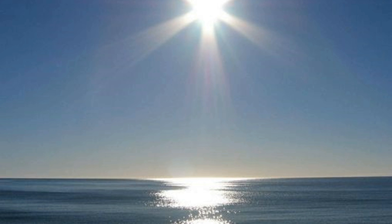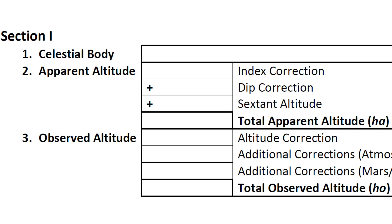In our example, let's assume the sun is roughly 20 degrees above the horizon. Except in extreme weather conditions, there will be no atmospheric adjustments to worry about, and it is far enough from 90 degrees that we should be able to obtain an accurate measurement. We note the sun as our celestial body on the sight reduction form.